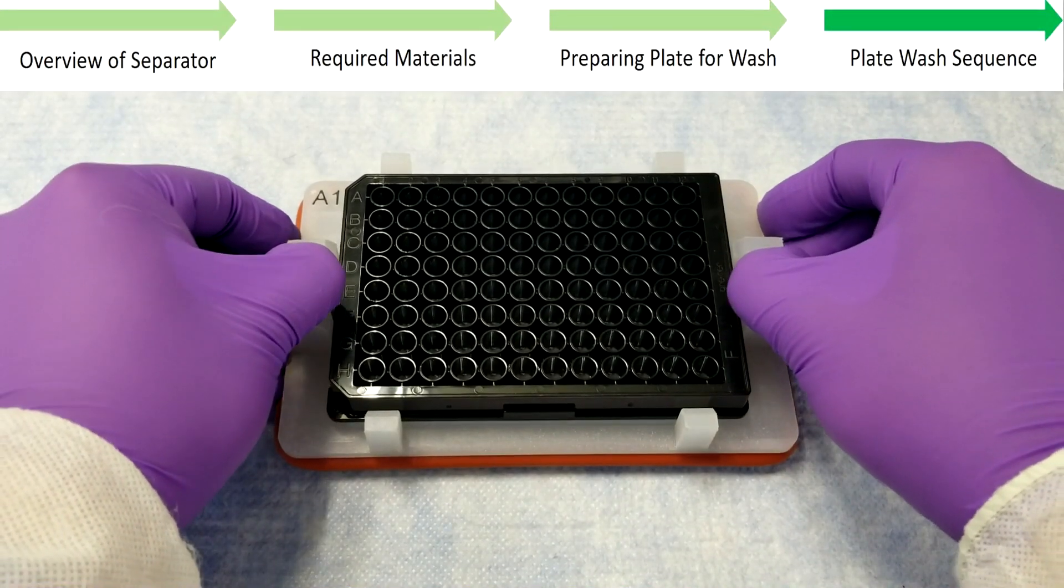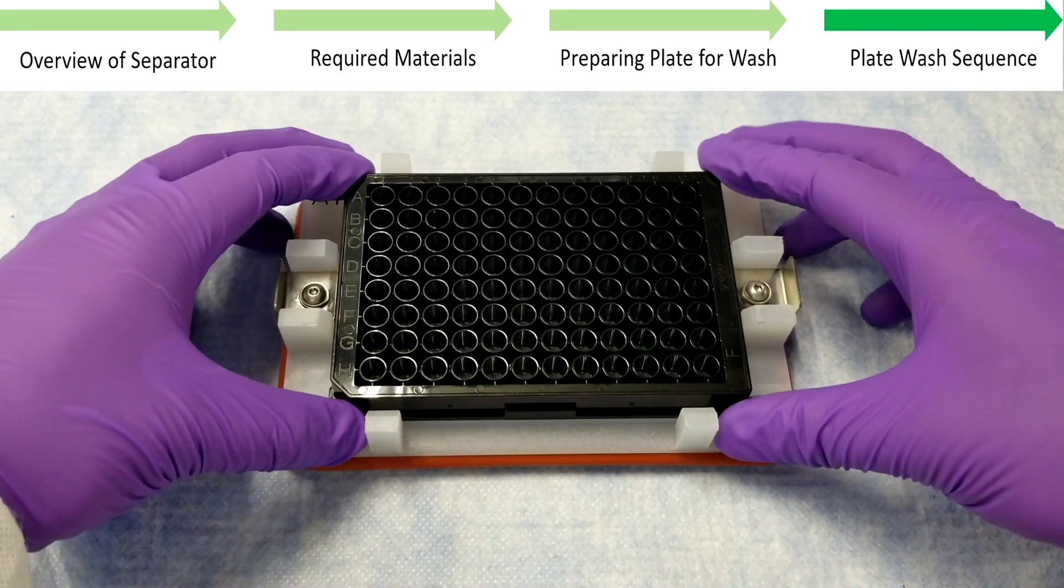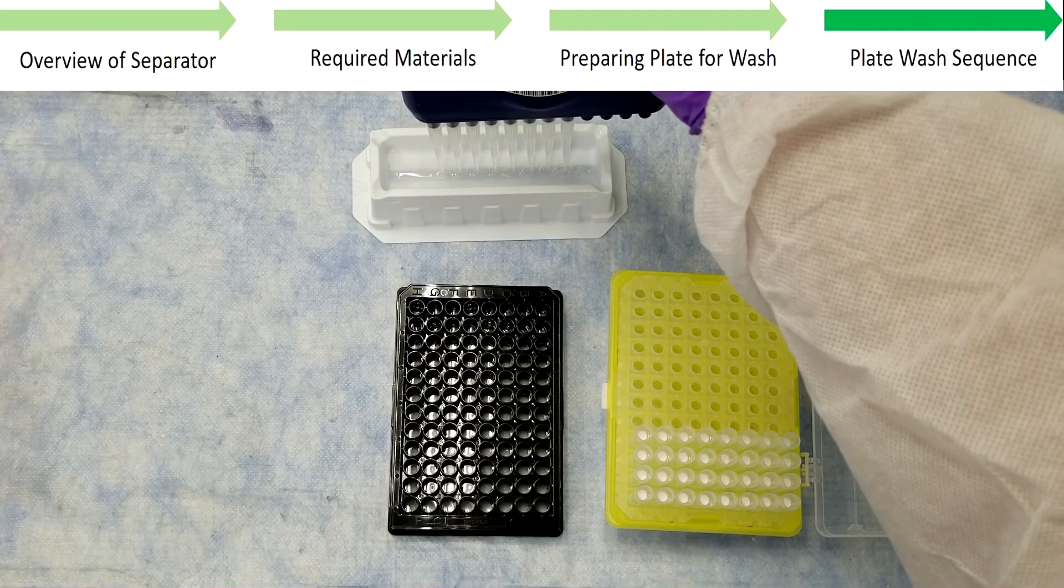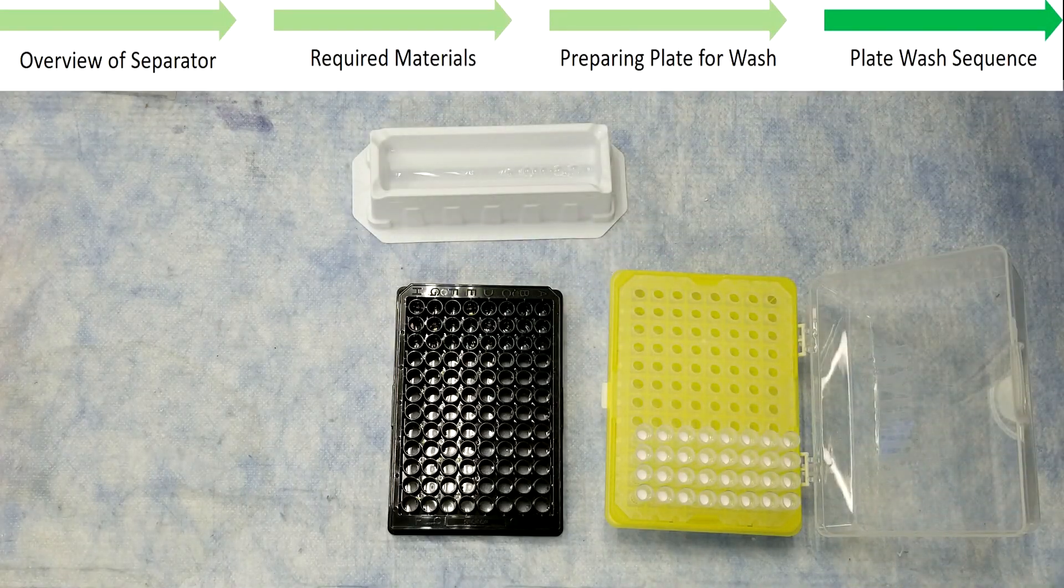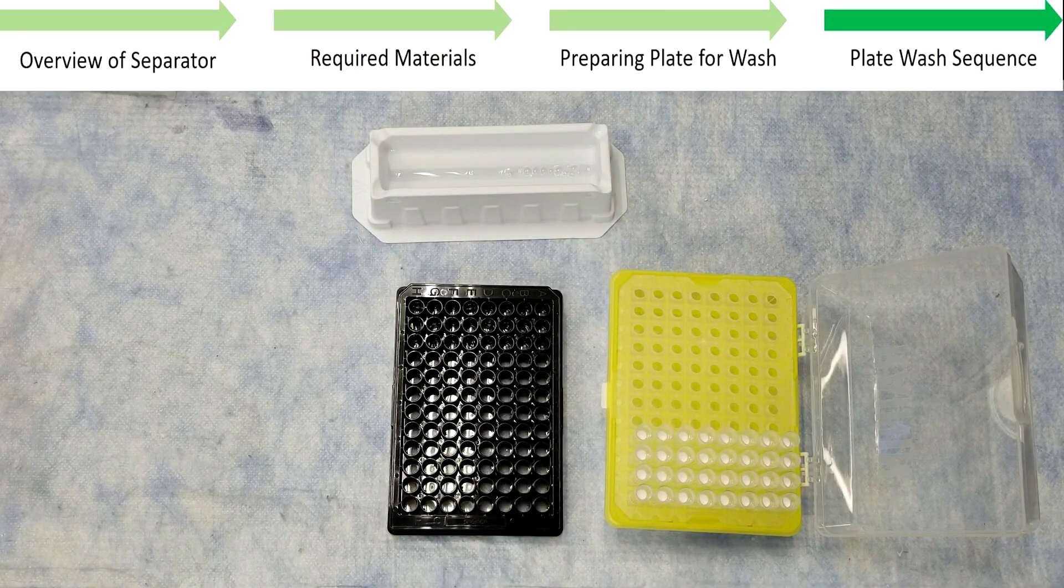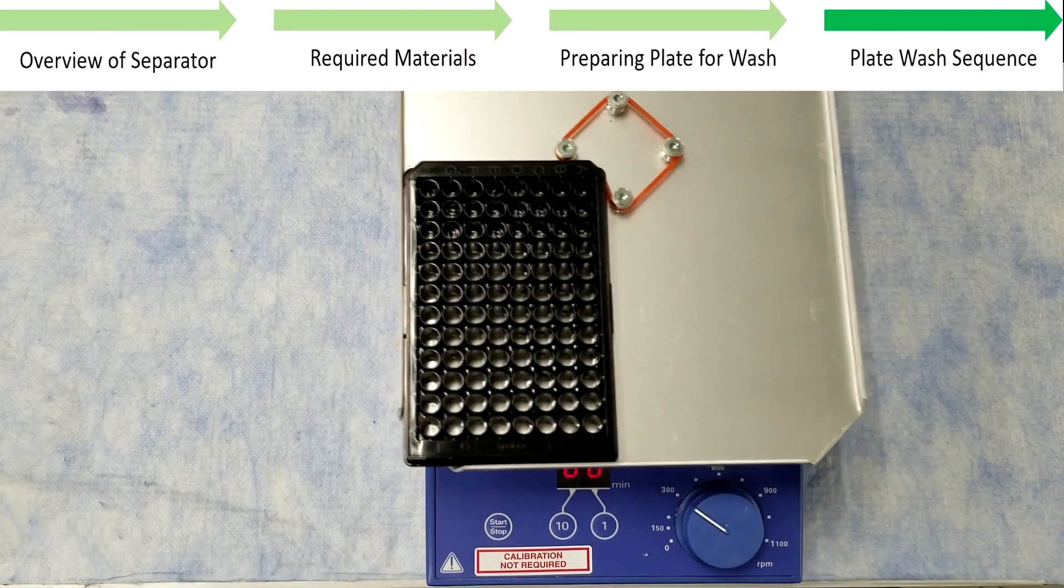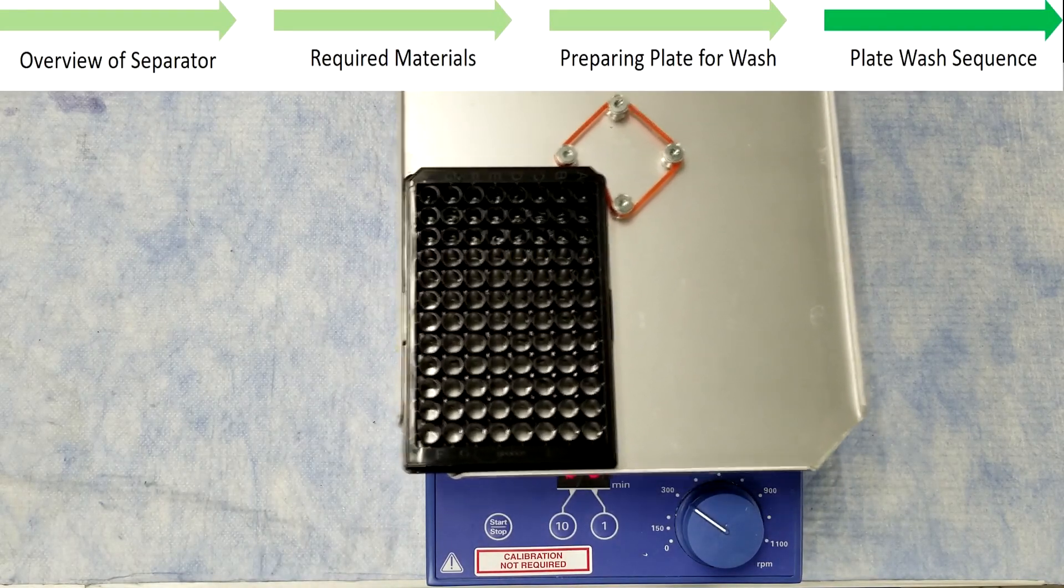To begin the wash cycle, remove the plate from the separator by unlocking the latches, and dispense 1x wash buffer from a clean reagent reservoir into the assay wells, using fresh tips each time. Shake the plate at 300 RPM for 30 seconds to circulate the beads with the buffer. Ensure that no spillover occurs between wells.